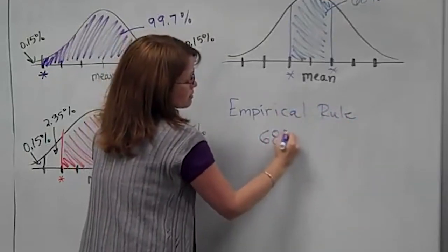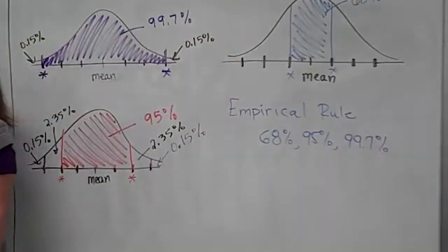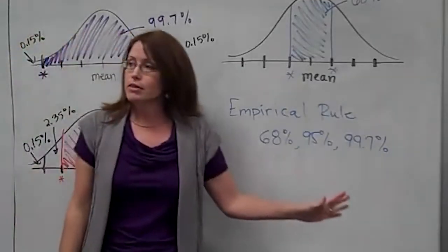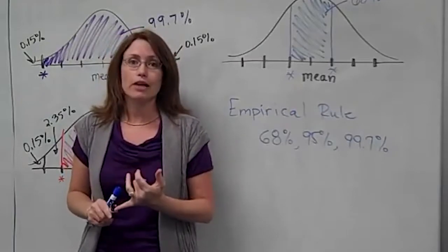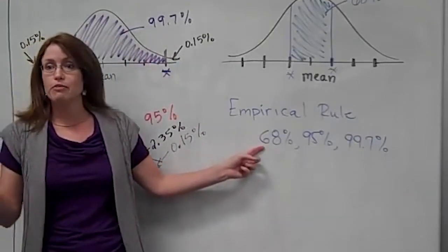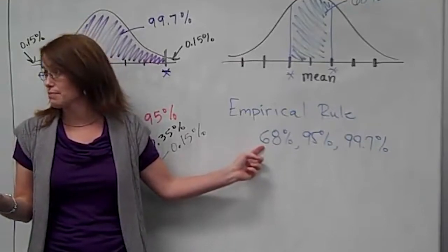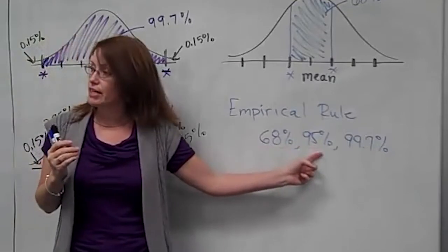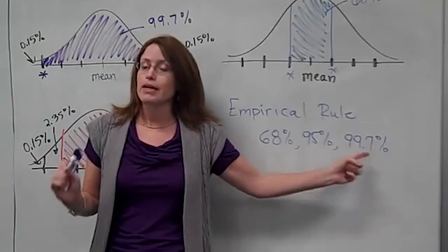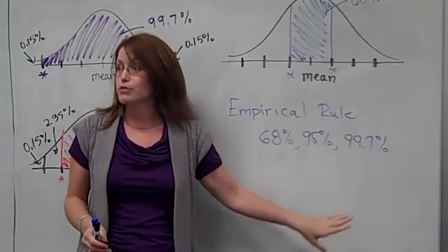What we've determined — and these are stated in the empirical rule — are 68%, 95%, and 99.7%. These are your common values no matter what your mean or standard deviation is. As long as you know it's normally distributed, if you move one standard deviation above and below the mean you expect 68% of the data. Two standard deviations gives 95%. Three standard deviations gives 99.7%. These percents work for every example — you will use them over and over again.